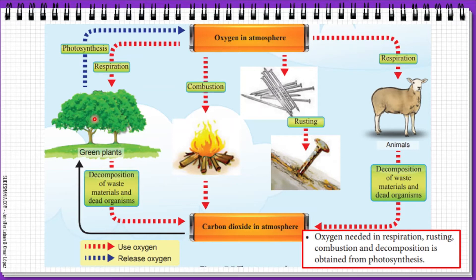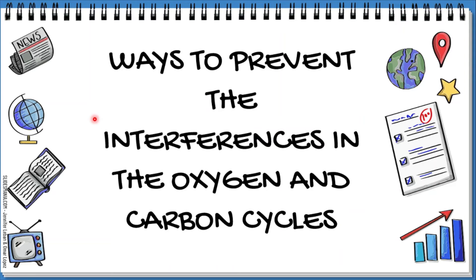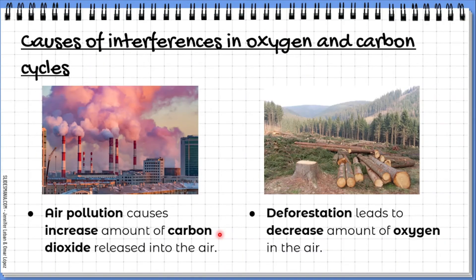So oxygen needed in respiration, rusting, combustion, and decomposition is obtained from photosynthesis. This means that the oxygen cycle and carbon cycle are interrelated to one another — saling berkaitan. Now we look at the second objective for today: ways to prevent interferences in the oxygen and carbon cycle — gangguan terhadap oxygen dan juga kitaran karbon. First, we will look at examples of human activities that can cause interferences in the oxygen and carbon cycle.